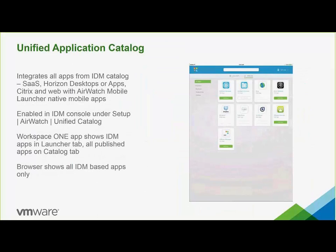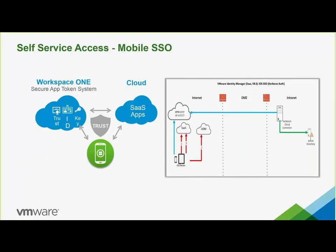The Unified App Catalog integrates all the apps from the Identity Manager Catalog. The Workspace ONE app shows Identity Manager apps in the Launcher tab and all the published apps in the Catalog tab. When using the browser, be aware it shows only Identity Manager-based apps. Workspace ONE provides self-service access with true mobile single sign-on using the secure app token system to allow the user to access their apps without the need to log in several times — whether the apps are on the internal corporate network or web-based SaaS applications in the cloud.